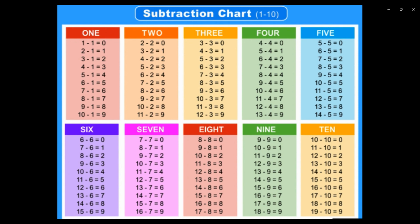Now, 5. 5-5 equals 0. 6-5 equals 1. 7-5 equals 2. 8-5 equals 3. 9-5 equals 4. 10-5 equals 5. 11-5 equals 6. 12-5 equals 7. 13-5 equals 8. 14-5 equals 9.